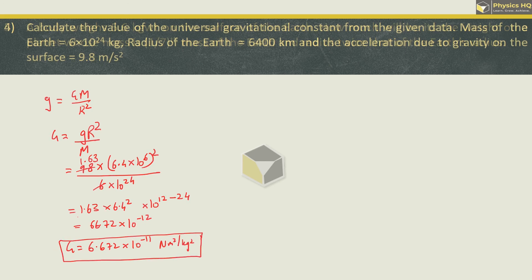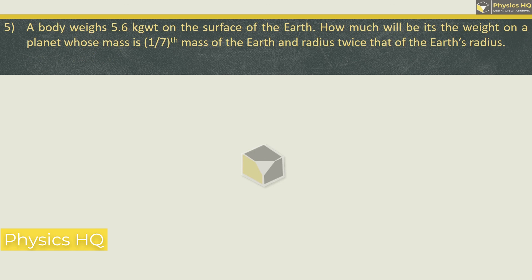A body weighs 5.6 kg weight on the surface of the earth. How much will be its weight on a planet whose mass is one-seventh of the mass of the earth and radius twice that of the earth's radius? First we need to understand that gravitational force of attraction, GMm/r², is nothing but the weight that a body experiences.